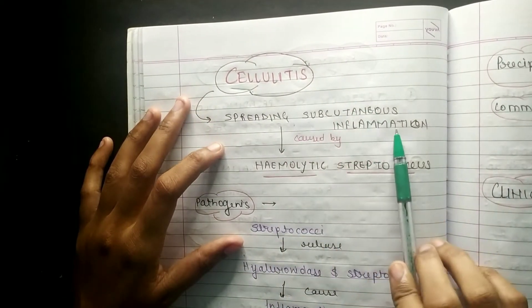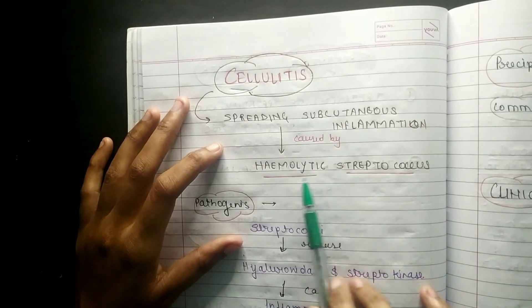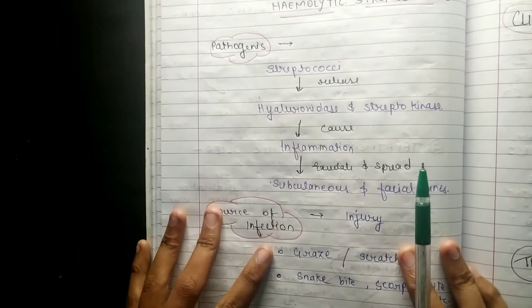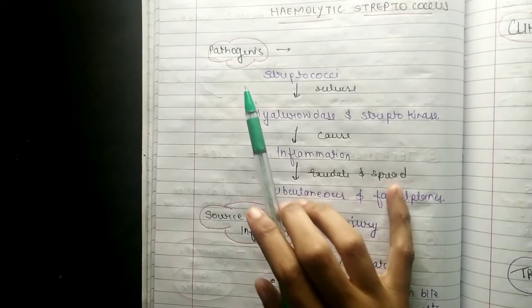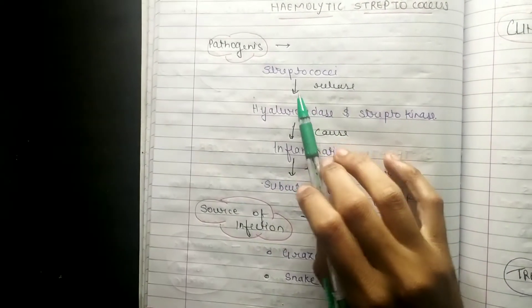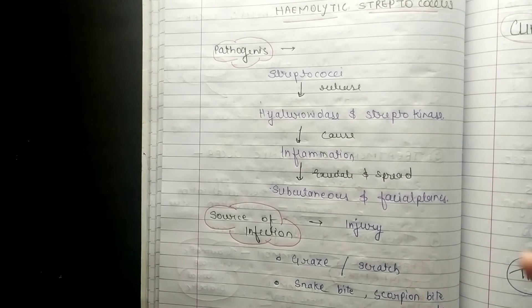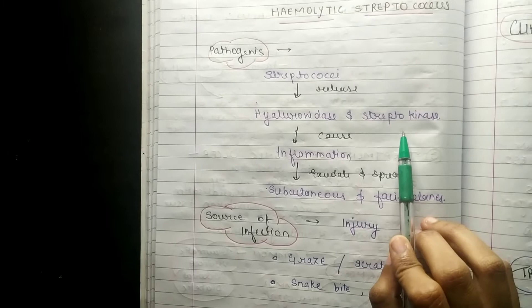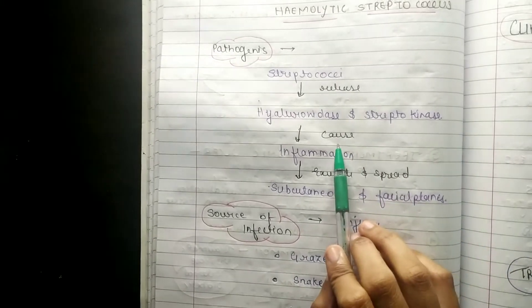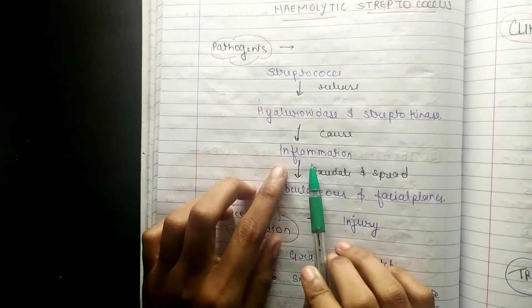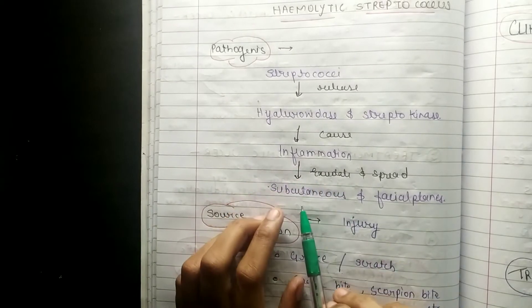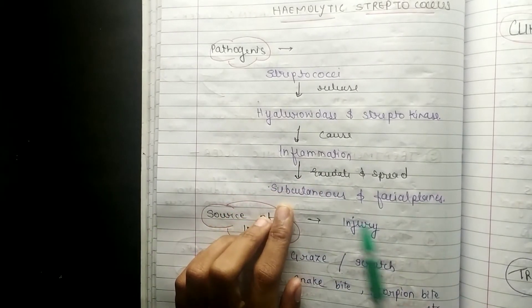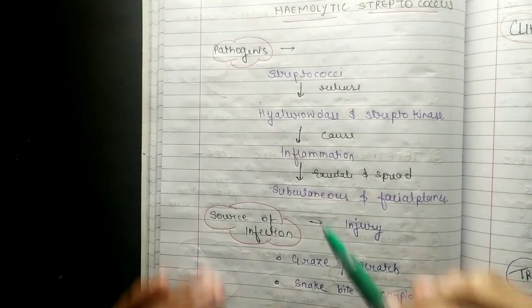Coming to pathogenesis, hemolytic streptococci will release hyaluronidase and streptokinase. These two will ultimately cause inflammation that will spread exudate in subcutaneous and fascial planes. This is the very basic and easy pathogenesis of cellulitis.